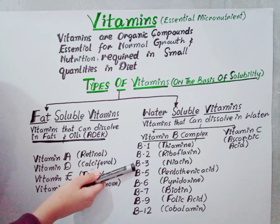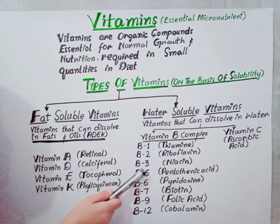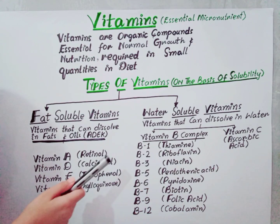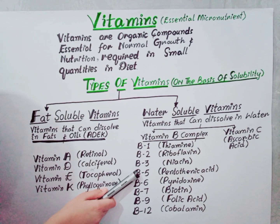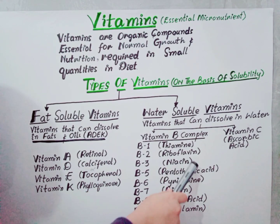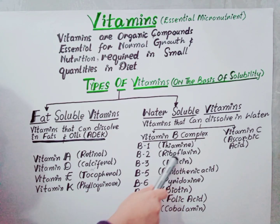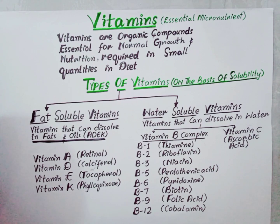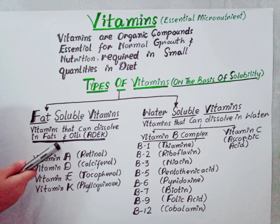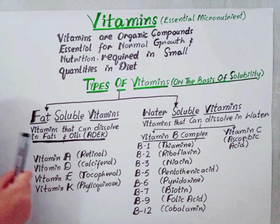Vitamin B3, also known as niacin. All dietary forms of niacin are eventually converted into nicotinamide adenine dinucleotide phosphate, which acts as a coenzyme. Niacin itself cannot be used directly — it must be converted into nicotinamide adenine dinucleotide phosphate. One important function of vitamin B3 is that it helps in glycolysis.